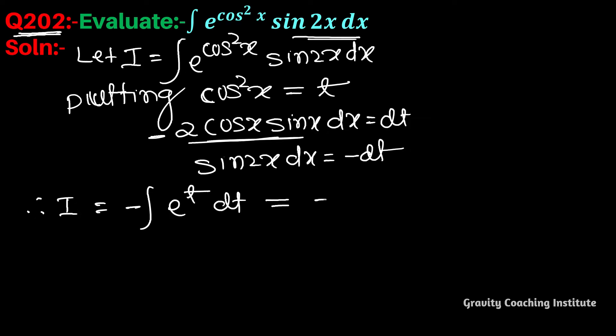And e^t integrated is e^t itself. So the answer is -e^(cos²x) + C.